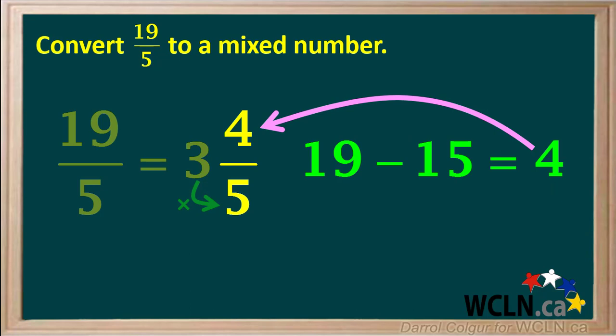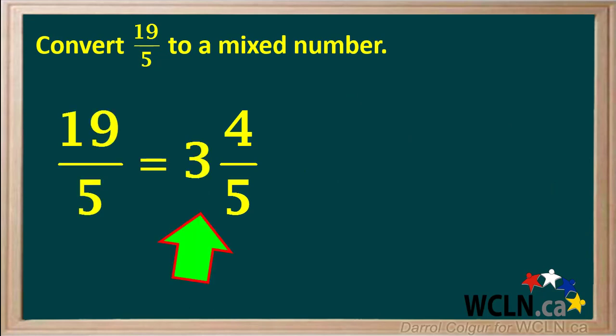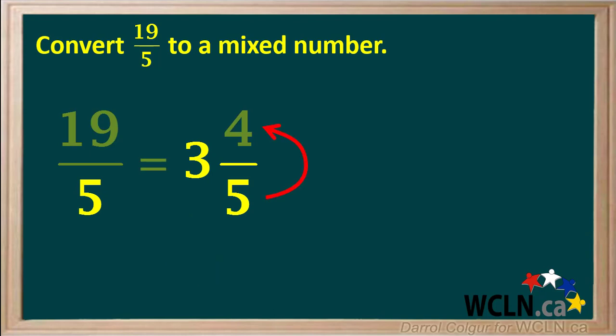The 4 is the numerator of our remainder fraction. So the final answer is the improper fraction 19 over 5 converted to the mixed number 3 and 4 fifths. It's always good to double check by working backwards from the mixed number: 3 times 5 equals 15, plus 4 is equal to 19. So 3 and 4 fifths is the same as 19 over 5.